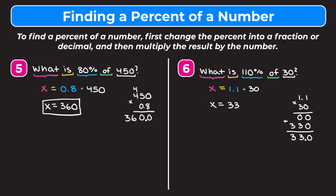We check that this makes sense: 110% is a little bit more than 100%, and 100% of 30 is just 30. Our answer of 33 is a little more than 30, so we're in the right ballpark. Hopefully this video helped you learn how to find percents of a number using an equation. If you're looking for more practice, check out the link in our description — we've linked a free worksheet with answers at the end so you can practice more of what you've learned.